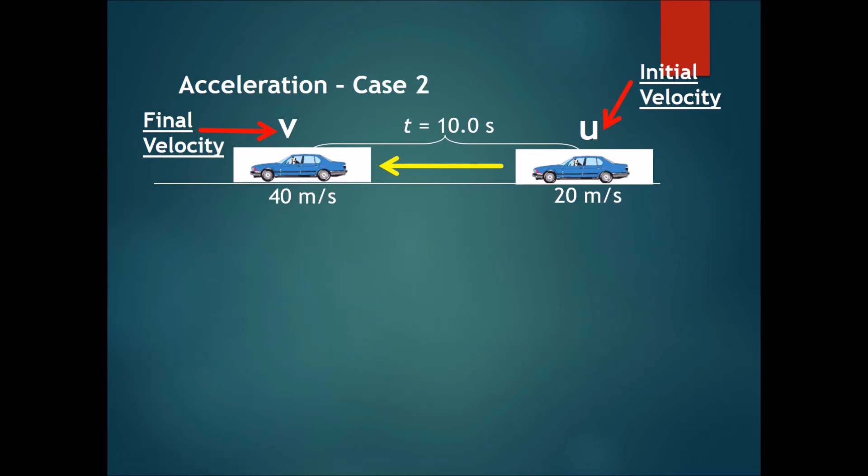So now let's take a look at the second case. Now the initial velocity is 20 meters per second. However, now the final velocity is 40 meters per second. And the time taken to get from 20 meters per second to 40 meters per second is 10 seconds.